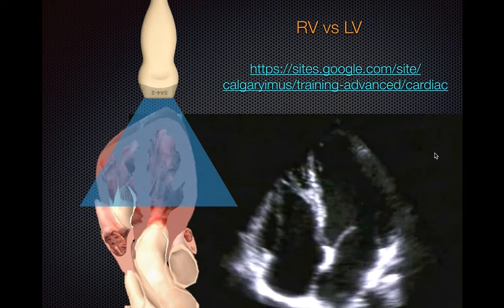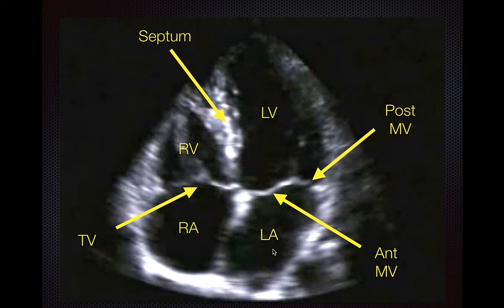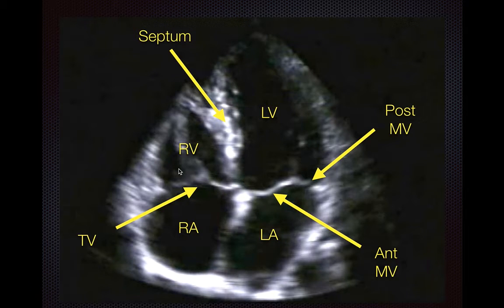In terms of the structures you're looking at: you have your left ventricle, the posterior mitral valve, the anterior mitral valve, left atrium, right atrium, tricuspid valve, and the septum in the middle with the right ventricle on the other side.